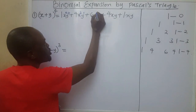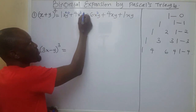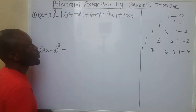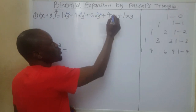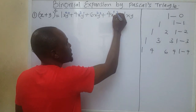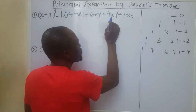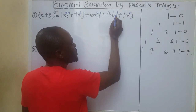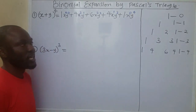X will decrease from 3 to 2 and y will increase from 1 to 2. If you add your powers, you get 4. X will decrease from 2 to 1 and y will increase from 2 to 3. Add your powers, you get 4. X will decrease from 1 to 0 and y will increase from 3 to 4. Add your powers, you get 4.